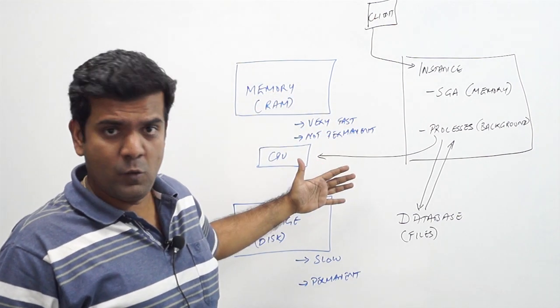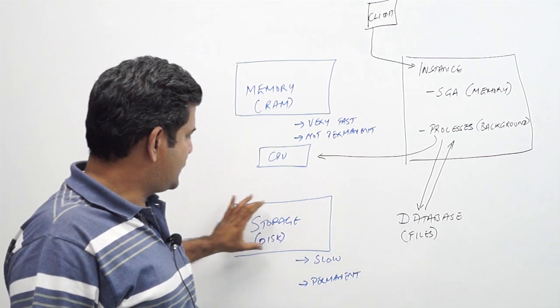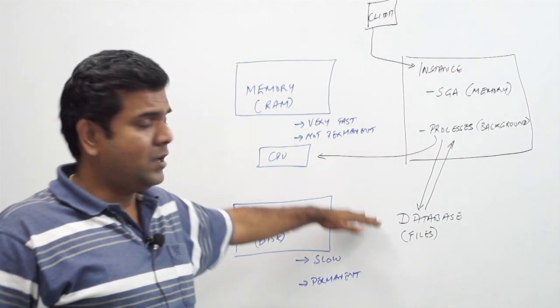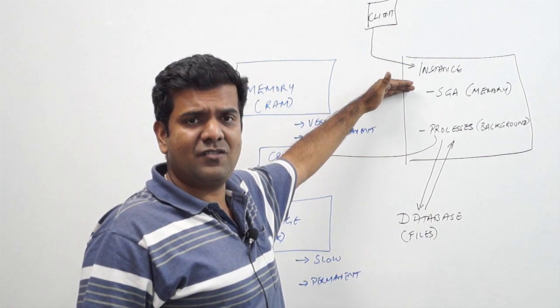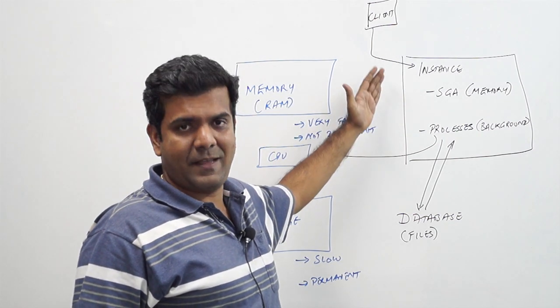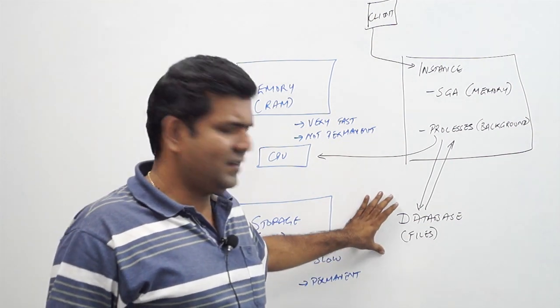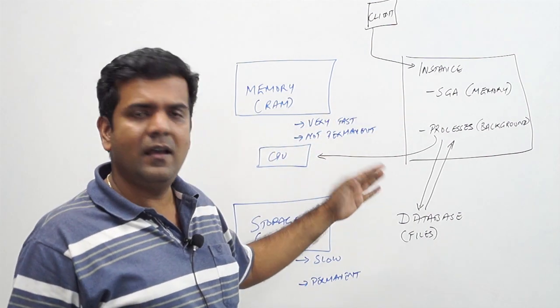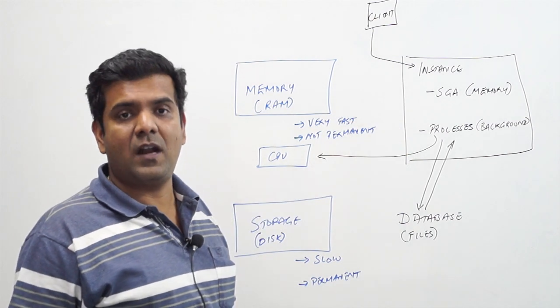So the takeaway from this video for you is to know that a database is a storage component which is a collection of files, and to work with the database we have an instance which has an SGA or memory structure and a set of processes through which we can process them. In the next few videos we will see what are the different types of files and what are the components in the SGA and what are the processes that are created as part of the instance.